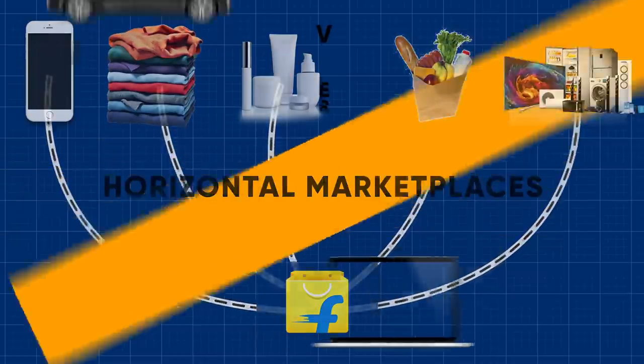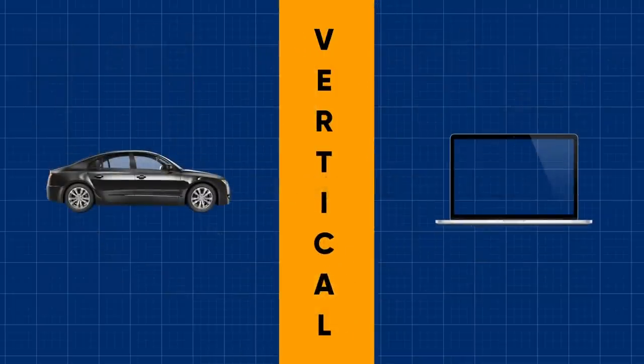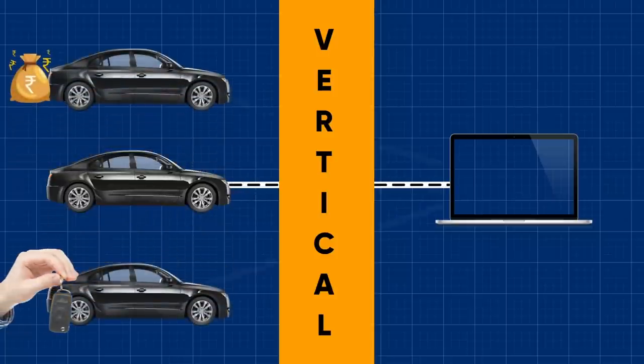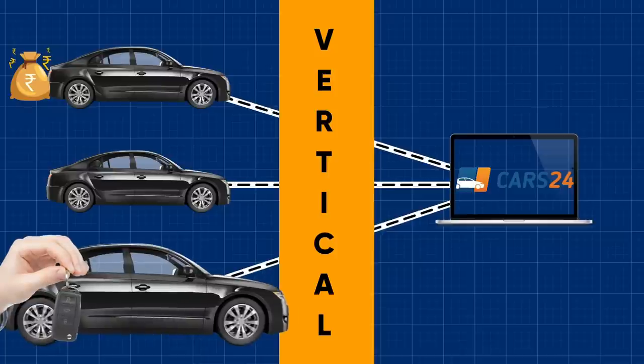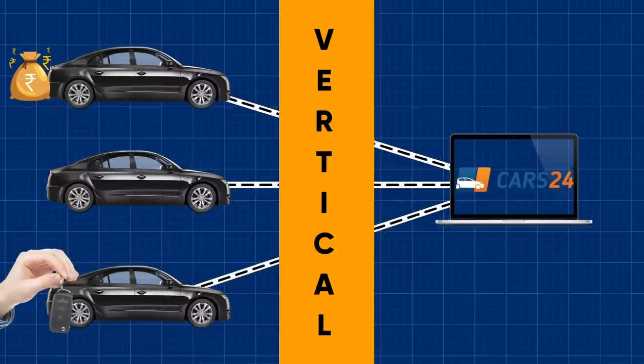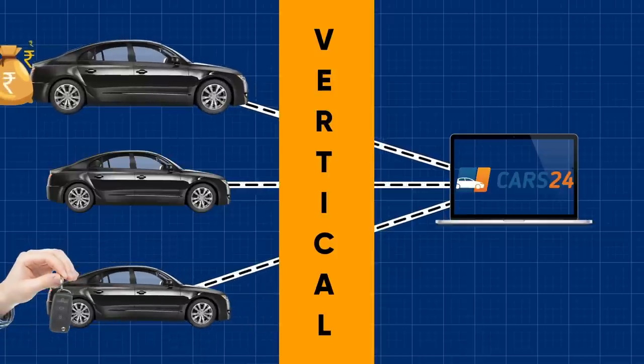Vertical marketplaces, on the other hand, focus on just one product category, but they offer a lot of variety within that category. And Cars24 is a great example of this because they buy and sell used cars and also provide other services, like car financing.